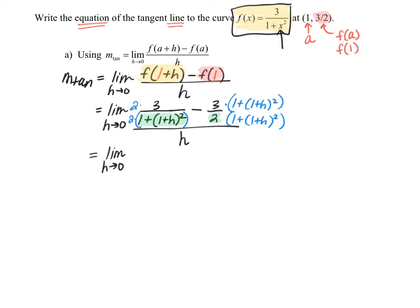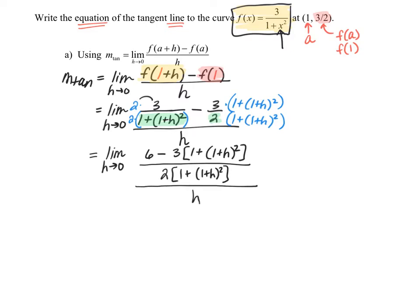Working the algebra: 2 times 3 is 6, minus 3 times the quantity 1 plus (1+h)² — I'll use brackets to avoid double parentheses — all divided by the common denominator 2 times 1 plus (1+h)², and this is all still divided by h. If you're tired of writing this as a complex fraction, instead of dividing by h you can multiply by the reciprocal, which is 1 over h. That looks cleaner and takes up less space, which is completely fine.